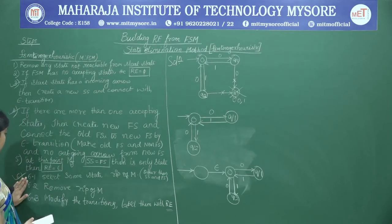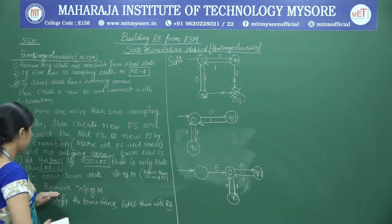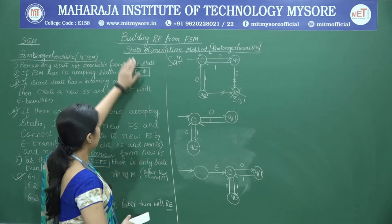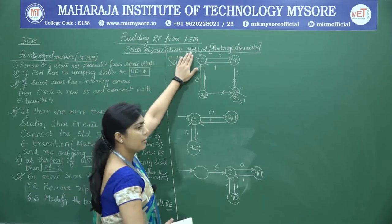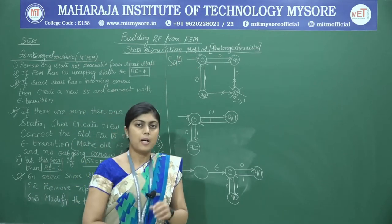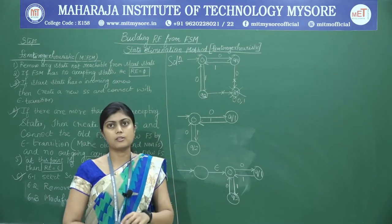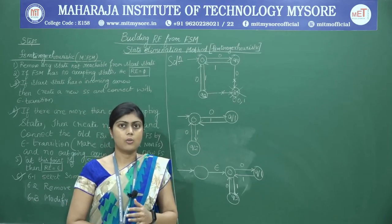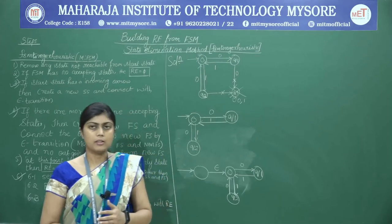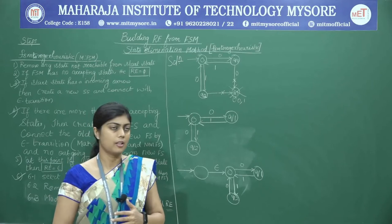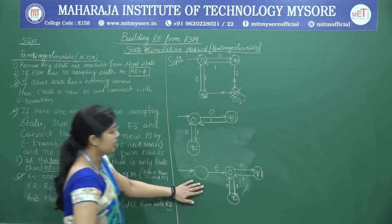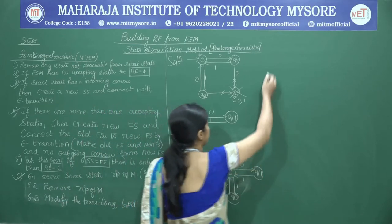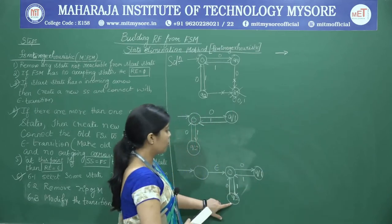We go to step 6 and follow it in a loop: select some state to eliminate, remove that state, and modify the transitions with a regular expression. This entire method is called the state elimination method. We eliminate every state apart from the start state and the final state. We choose Q2 for elimination first.